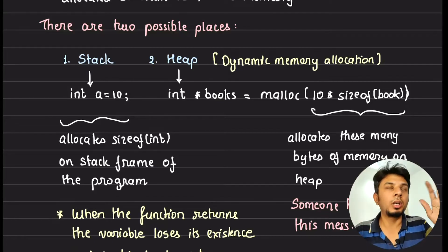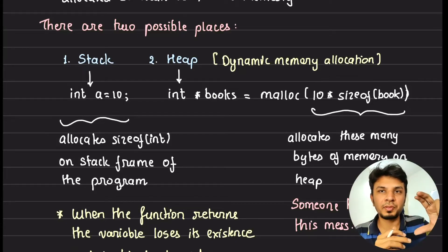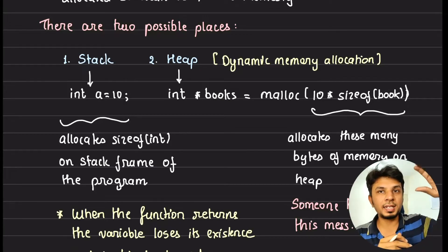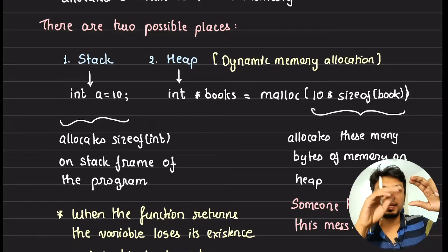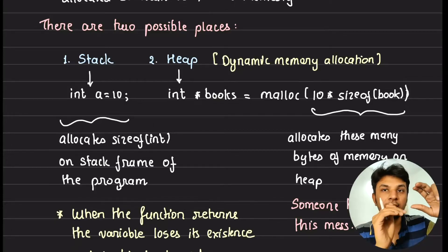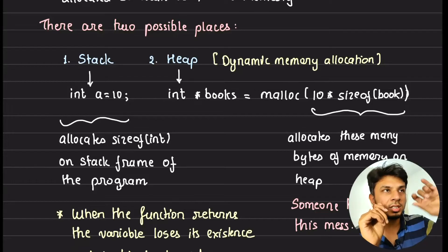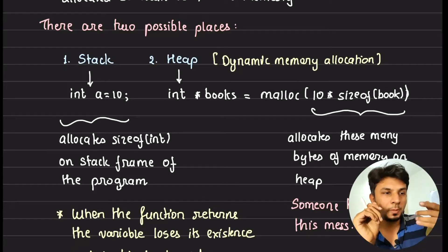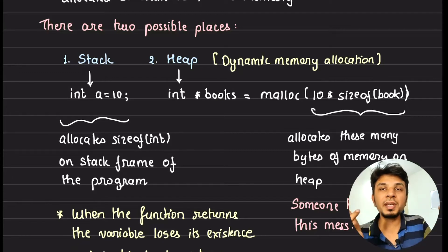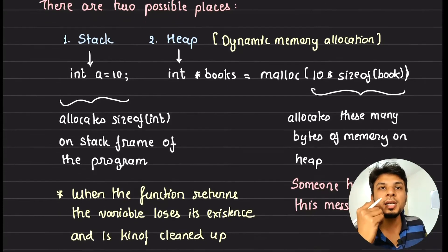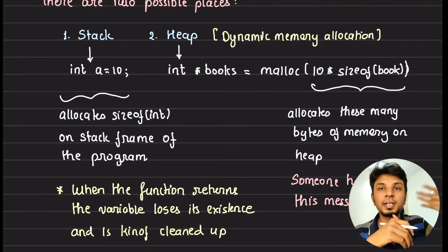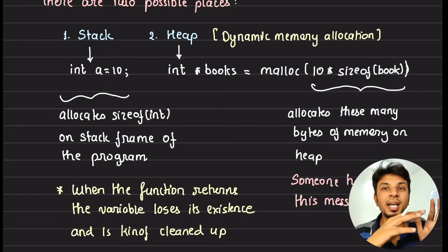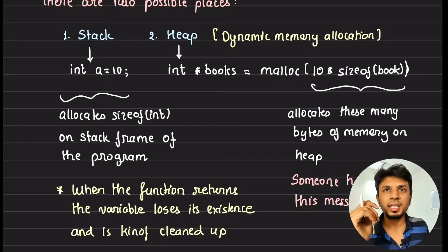Whenever you allocate a variable like 'int a = 10' in a function scope, it gets allocated in the stack frame of that function. When that function invokes another function, a new stack frame is added on top of the stack, where that function's local variables are defined. When a function returns, the stack frame is popped and the variable loses its relevance. That's why you don't need explicit garbage collection for stack-allocated variables.